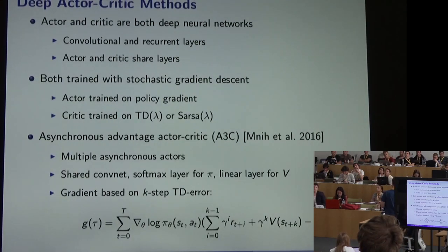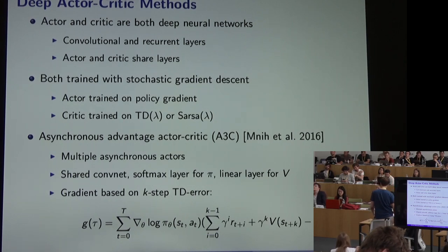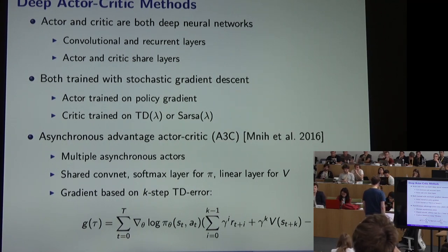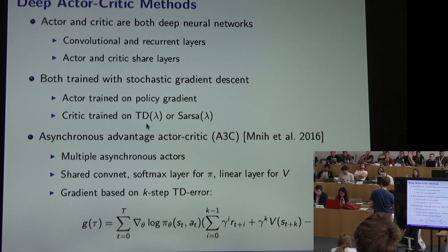In deep actor-critic methods, both the actor and critic are typically deep neural networks that may have convolutional and recurrent layers — and in many methods they share layers, sometimes all layers except the last. Both can be trained with stochastic gradient descent: the actor does gradient ascent on the policy gradient, and the critic minimizes a TD(lambda) or SARSA(lambda) loss depending on whether it represents V or Q.